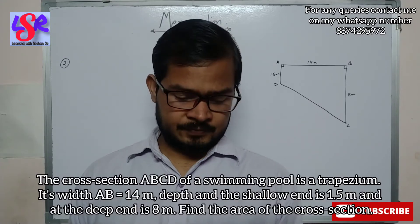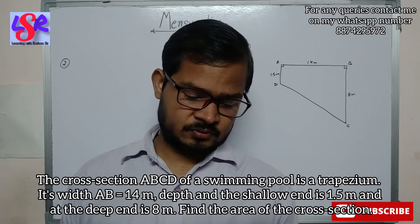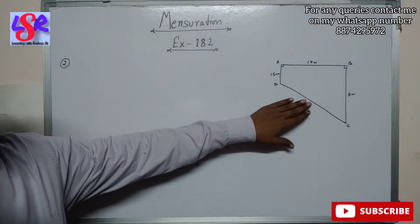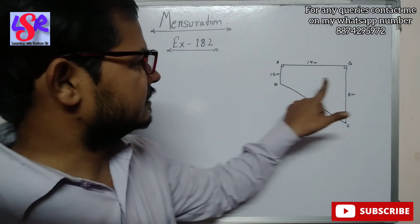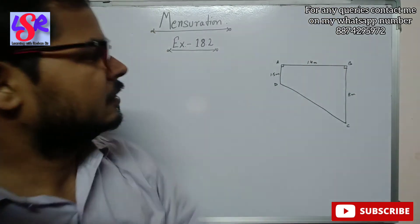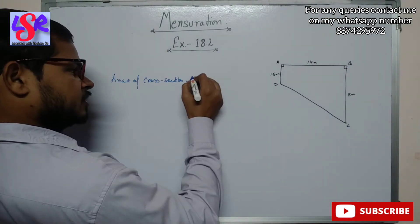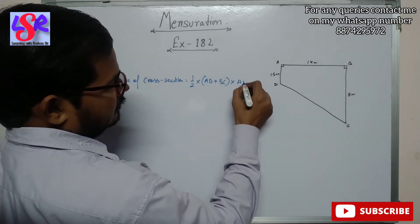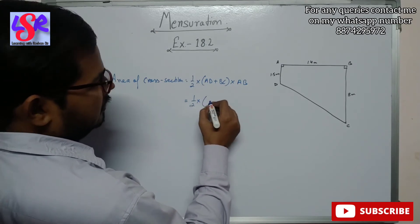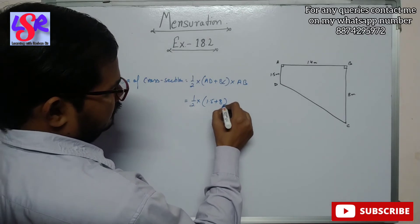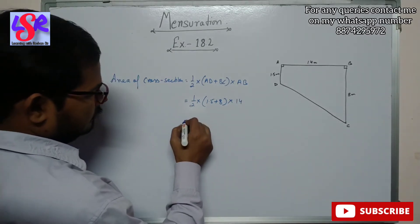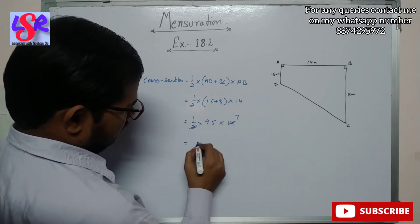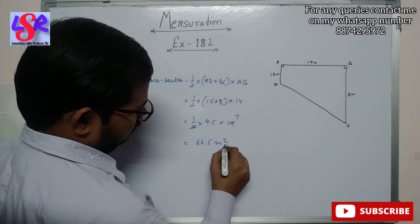Question 2: The cross section ABCD of a swimming pool is a trapezium. Its width AB = 14 meters, depth at the shallow end AD = 1.5 meters, and deep end BC = 8 meters. Find the area of the cross section. Area = 1/2 × (AD + BC) × AB = 1/2 × (1.5 + 8) × 40 = 1/2 × 9.5 × 40 = 9.5 × 20 = 66.5 meters squared.